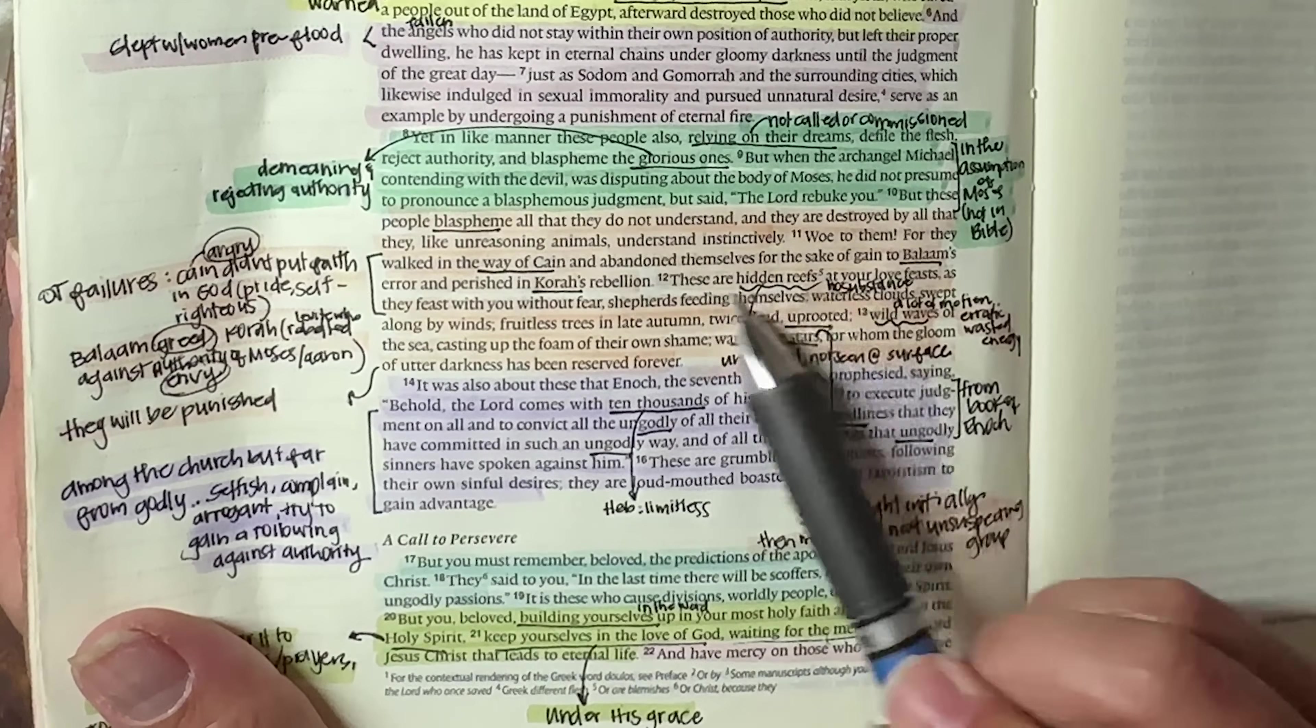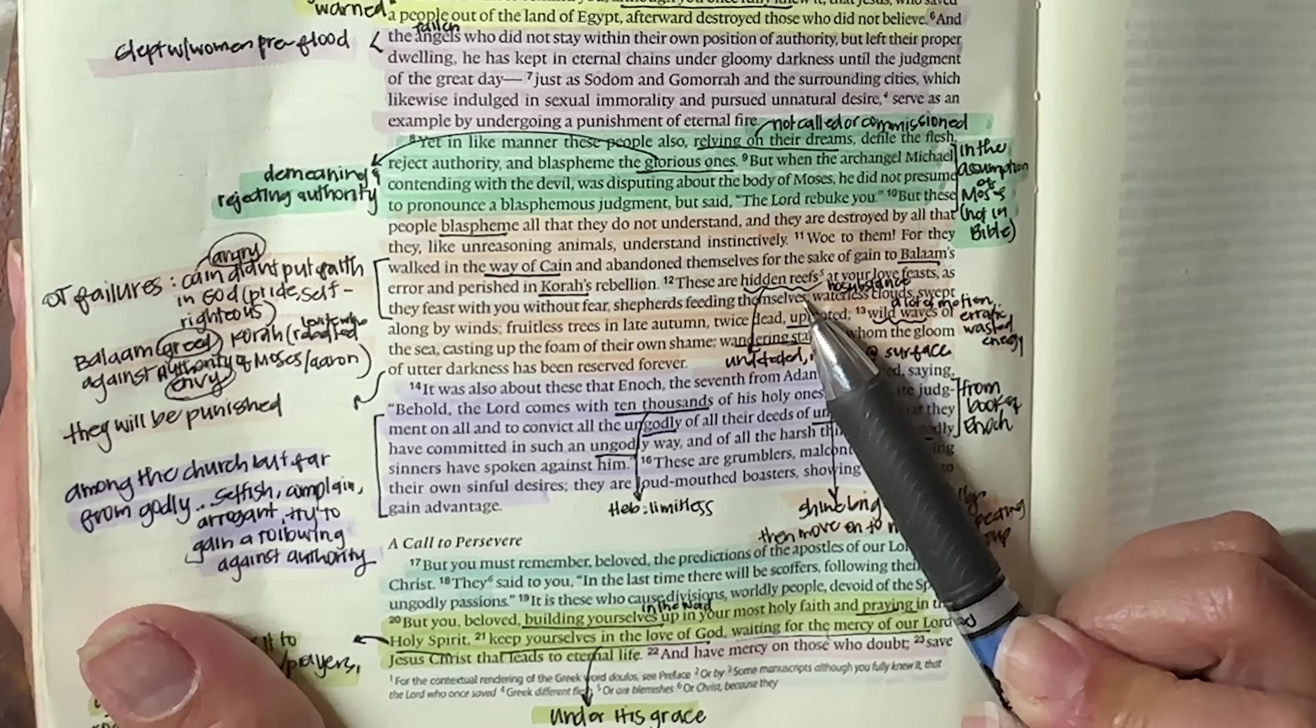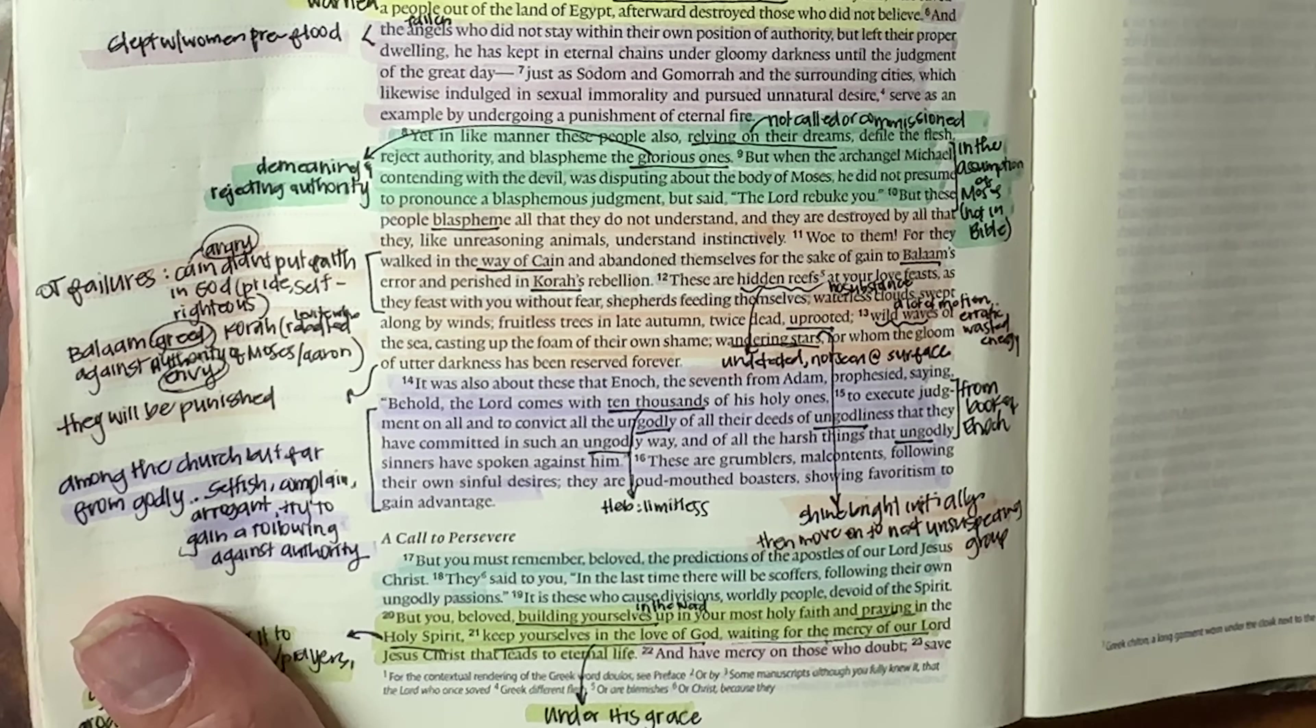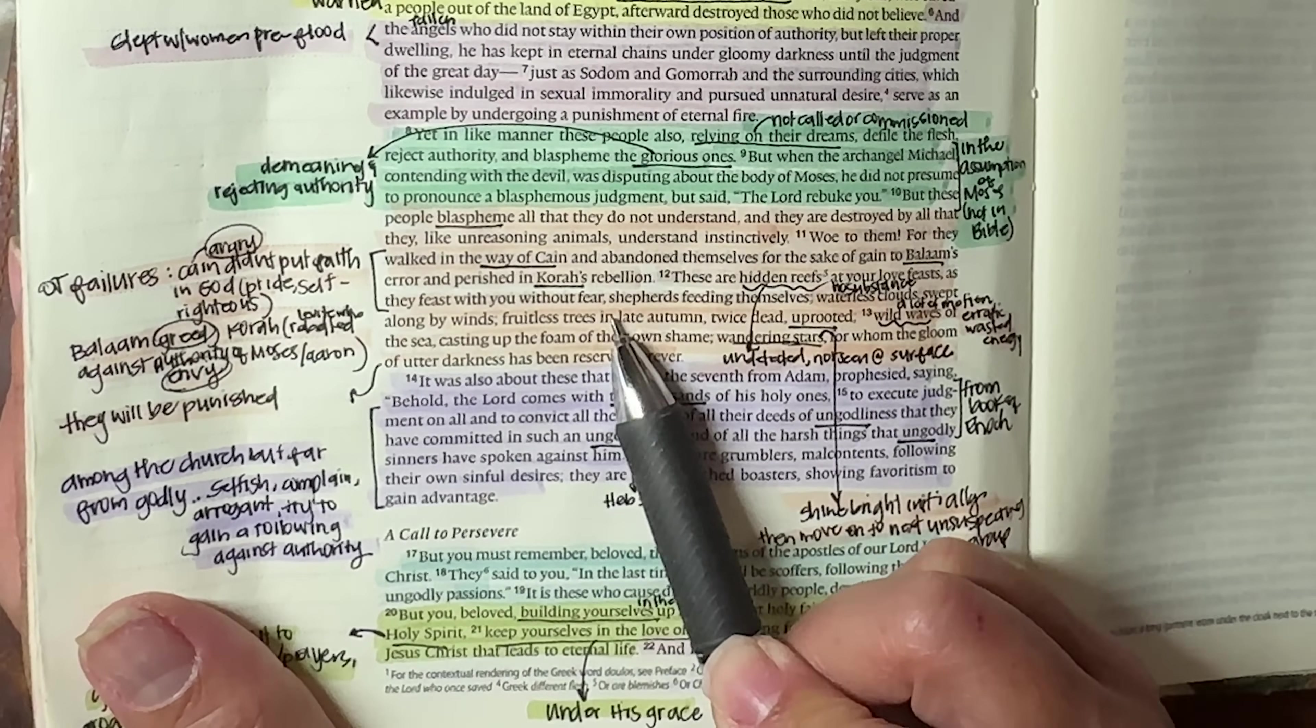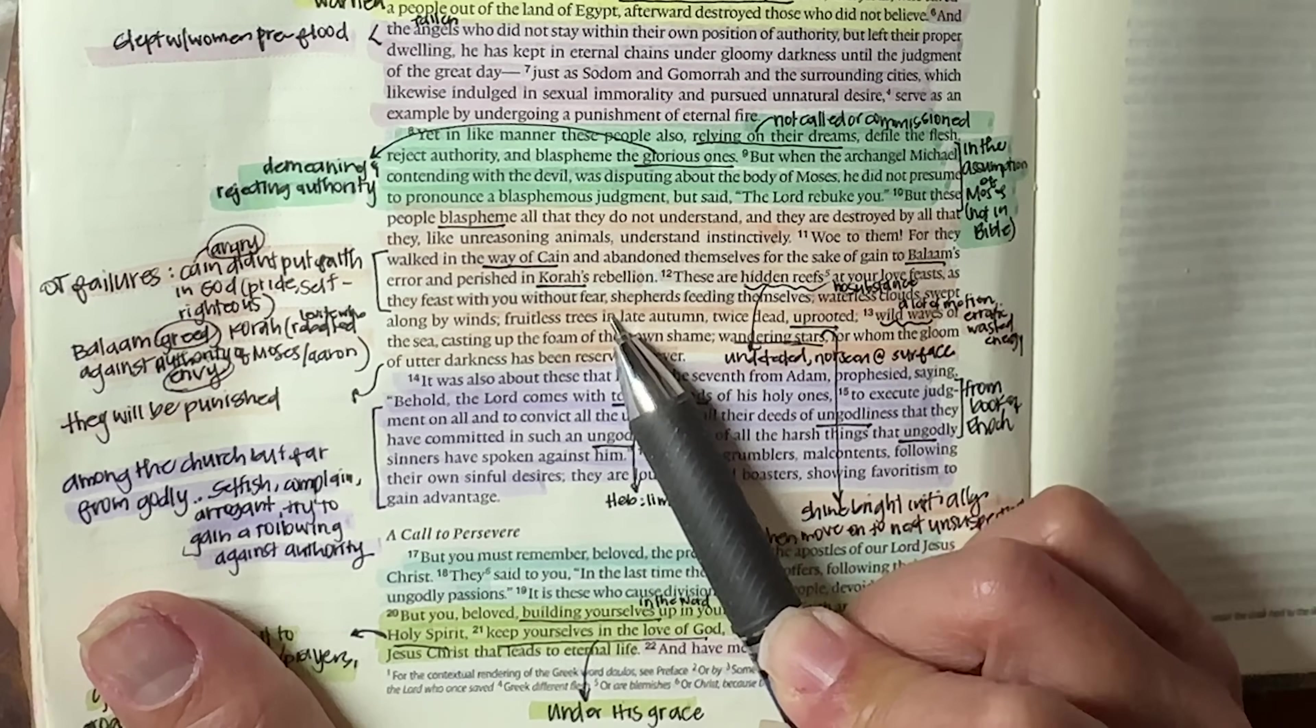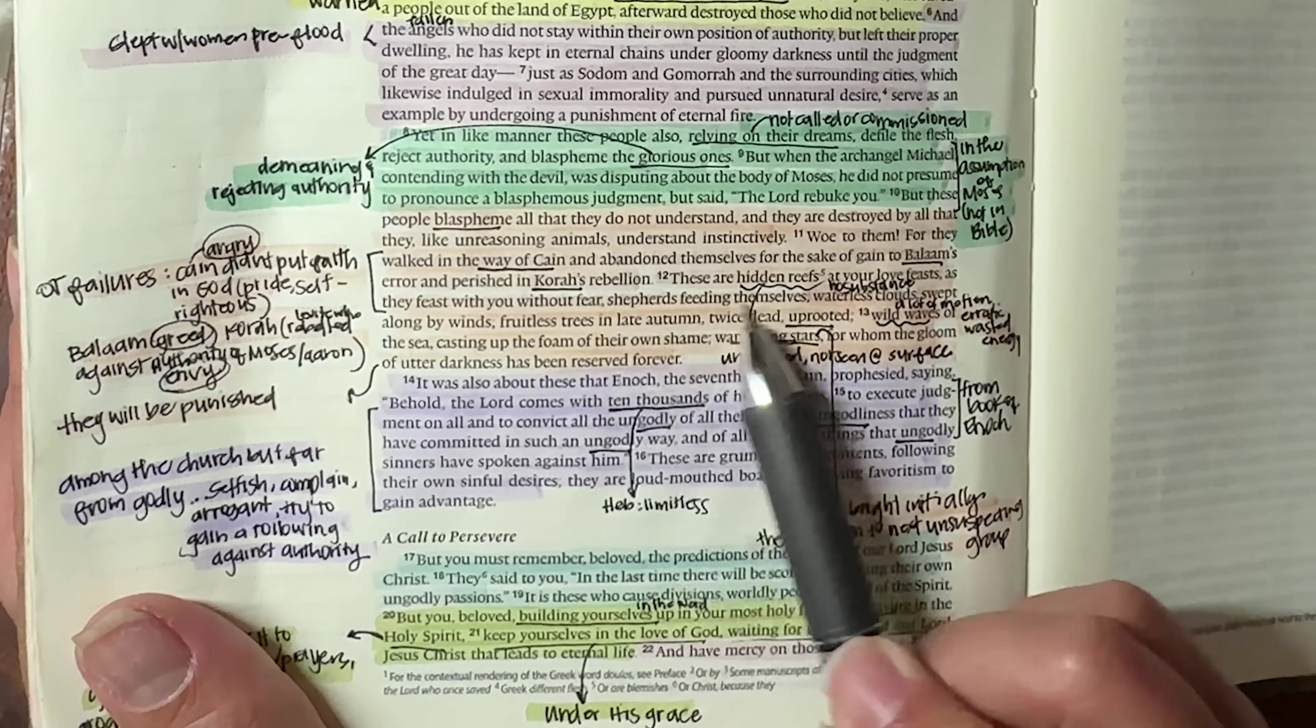These are hidden reefs. Again, they're not going to be waltzing and saying, I'm a false teacher. No, they're going to be underground, undetected, not seen at the surface, but underneath they're stirring up the waves. At your love feasts, as they feast with you without fear. So they are going to be bold in their ability to be able to prey on people who are weak. Shepherds feeding themselves. So they are all about their own gain.